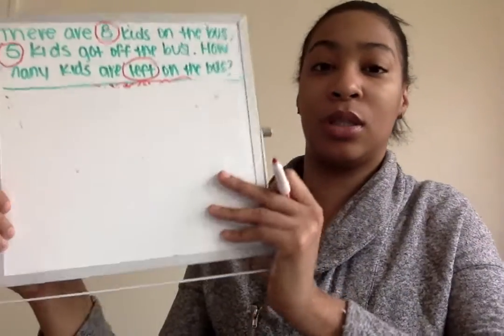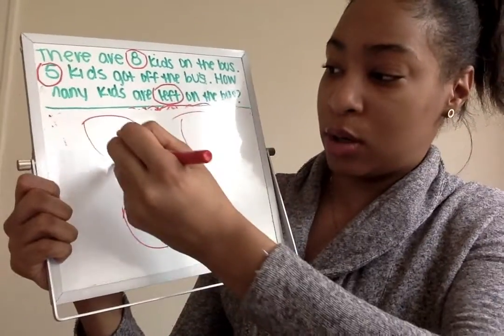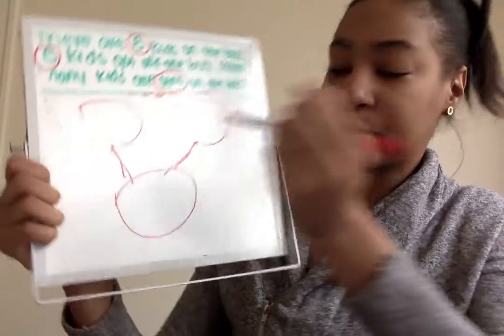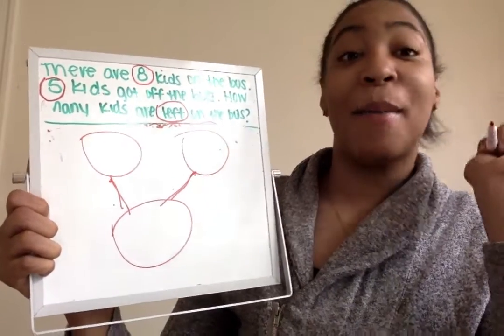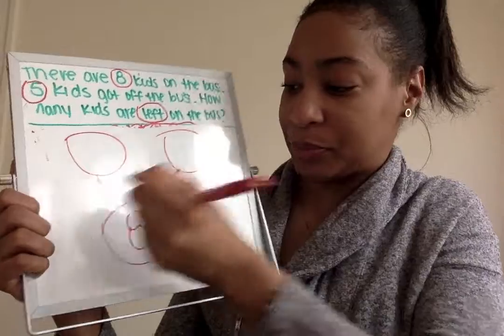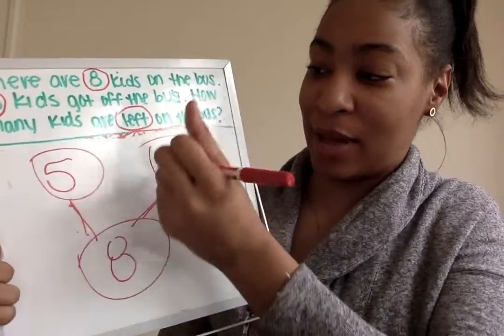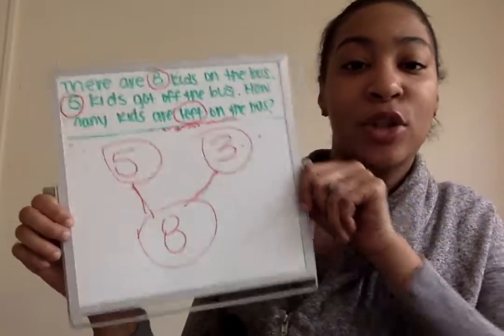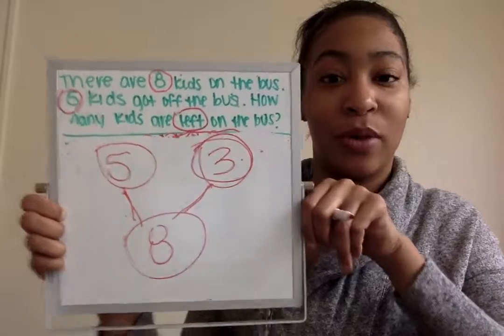Now let's go right in and do our number bond. We need three circles for our number bond, doing part, part, whole. What should I put in my whole? Perfect — we should put eight. Then what should I put in my parts? Five. And our answer, which is three. Two parts make up a whole. We have five and three in our parts and eight in our whole, because we know that three kids were left on the bus. Good job, Kipsters, and I will see you all tomorrow.